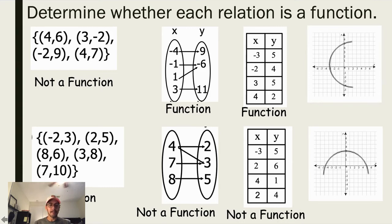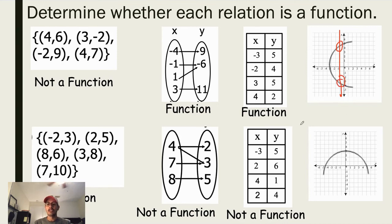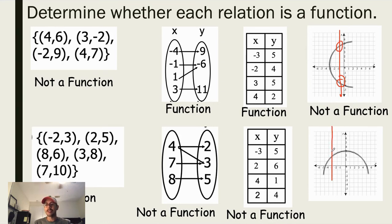When we look at the top graph, if we draw a vertical line throughout it, we see it does not pass the vertical line test because it crosses in two spots, so this would not be considered a function. But if we look at the second graph and draw a vertical line anywhere on it, it only intersects in one spot, so this would be considered a function.